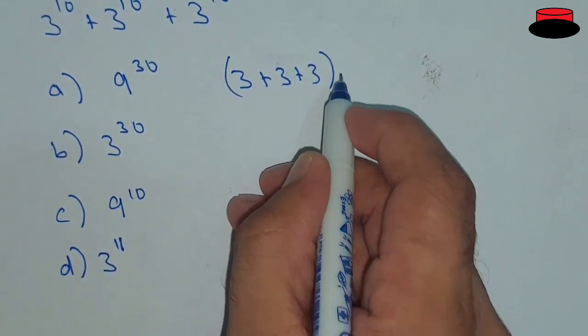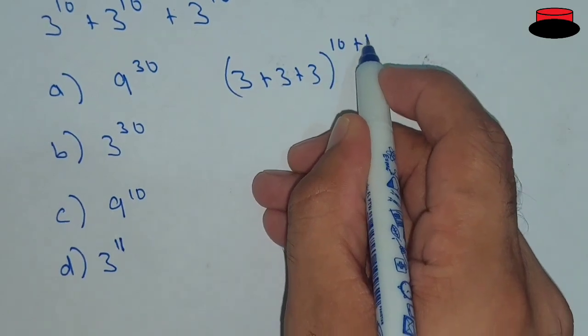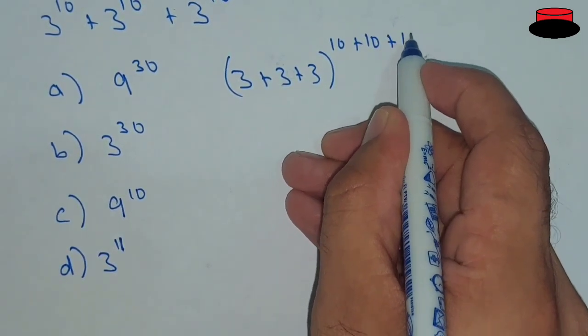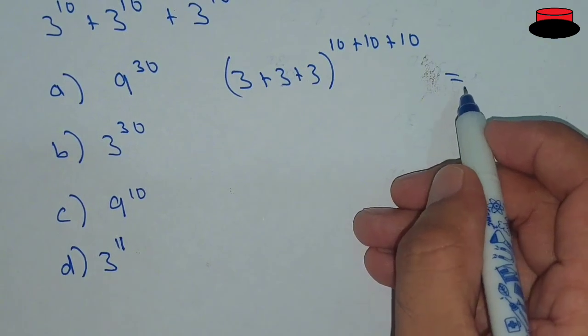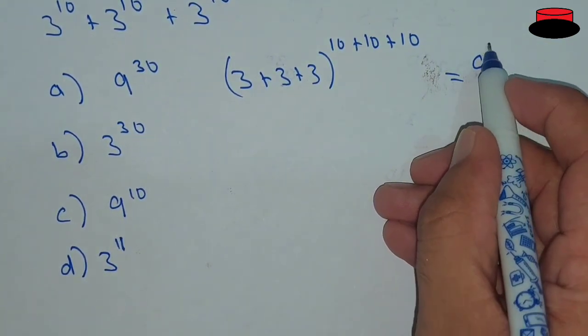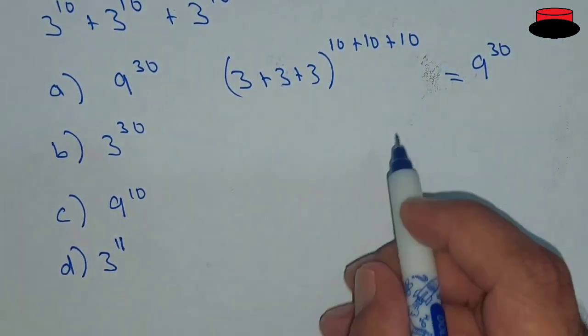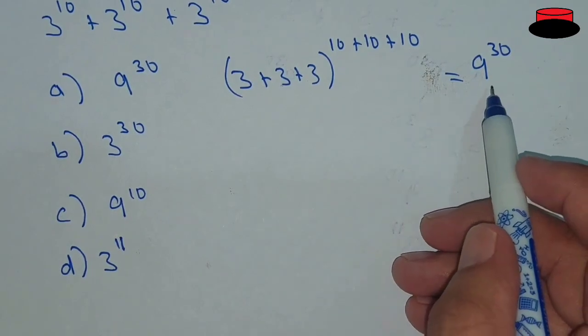Let's look at the first approach: (3 + 3 + 3)^(10 + 10 + 10). This is the wrong approach. If we solve it this way, the answer would be 9^30, and that is not correct.